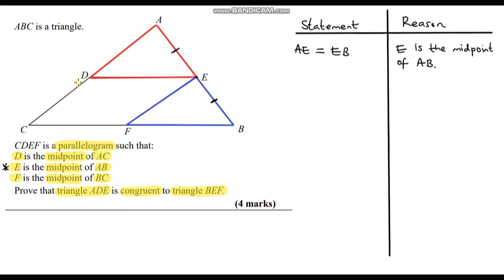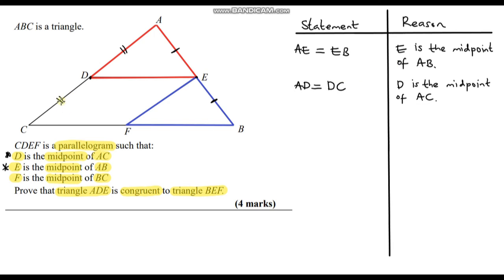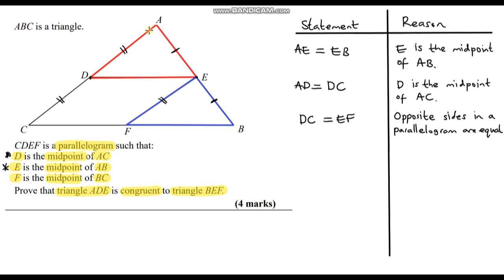We're also told that D is the midpoint of AC, so AD equals DC. Now you might think: what good is that? However, because CDEF is a parallelogram, opposite sides are equal, so DC equals EF. Combining both pieces of information, we can now say AD equals EF, and the reason is that both lengths are equal to DC.